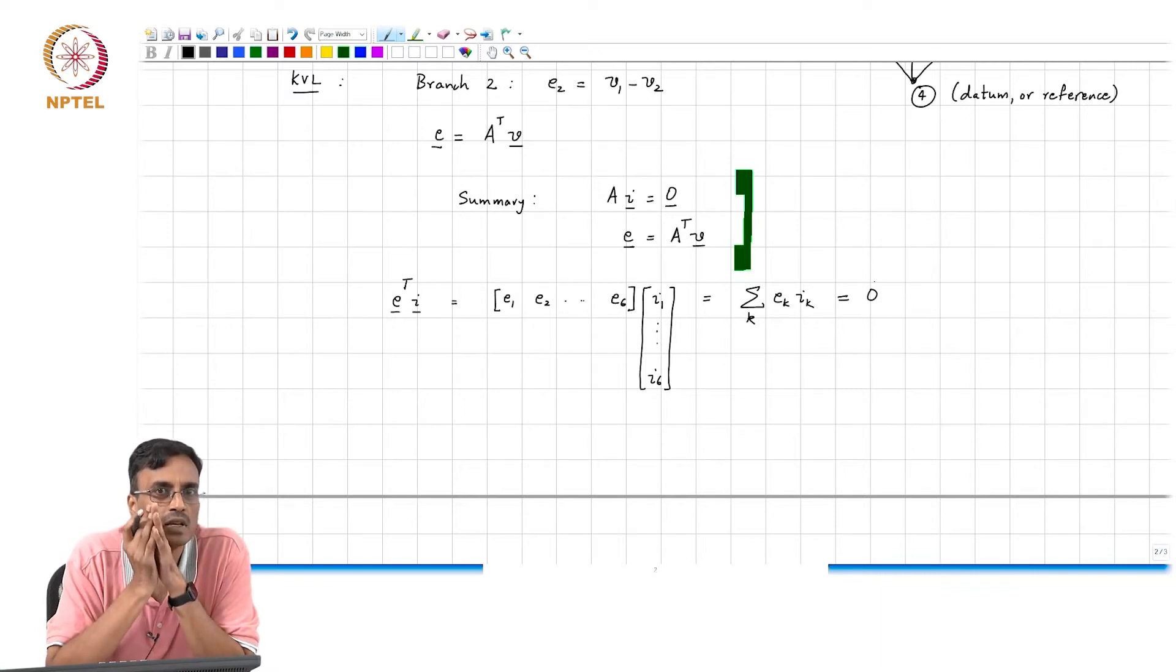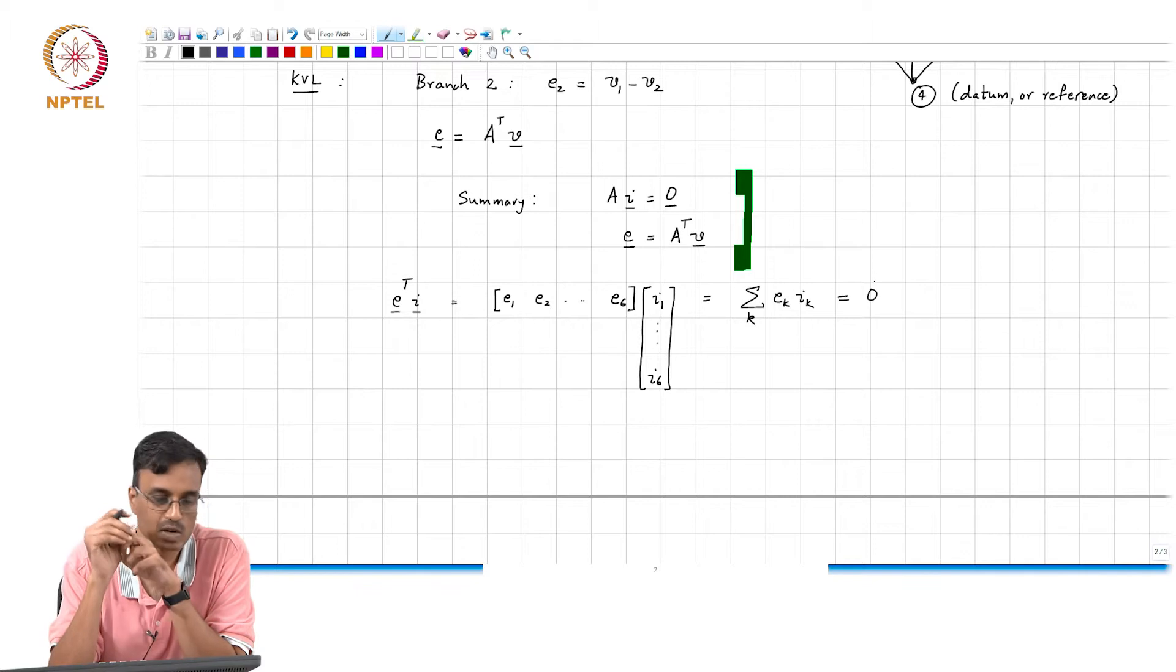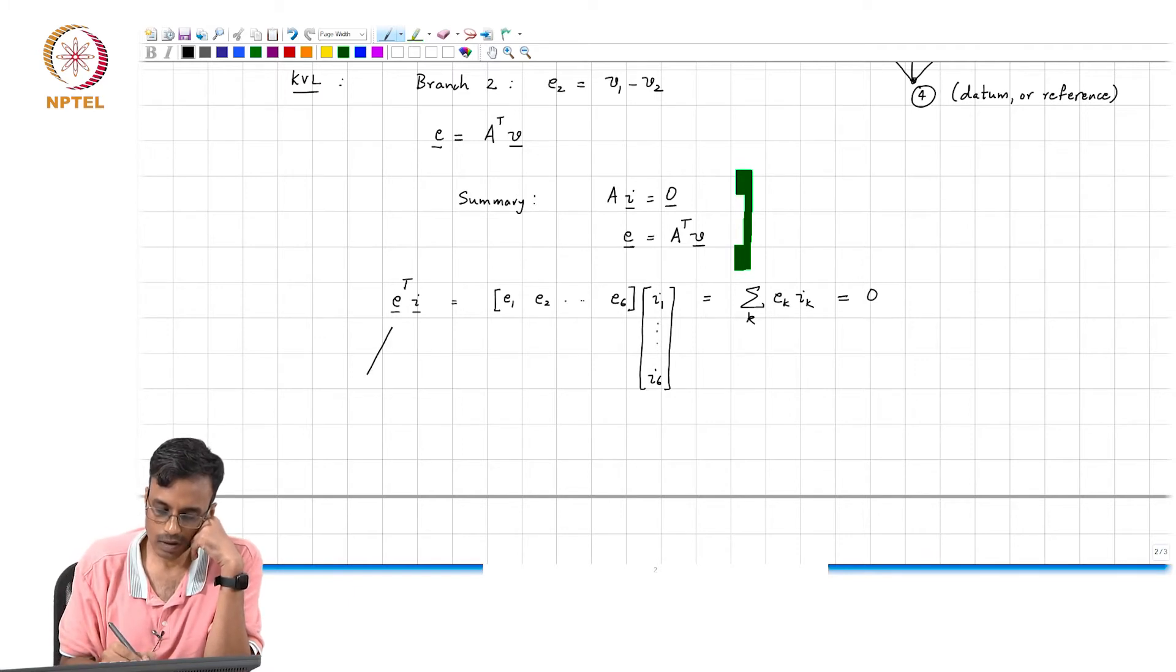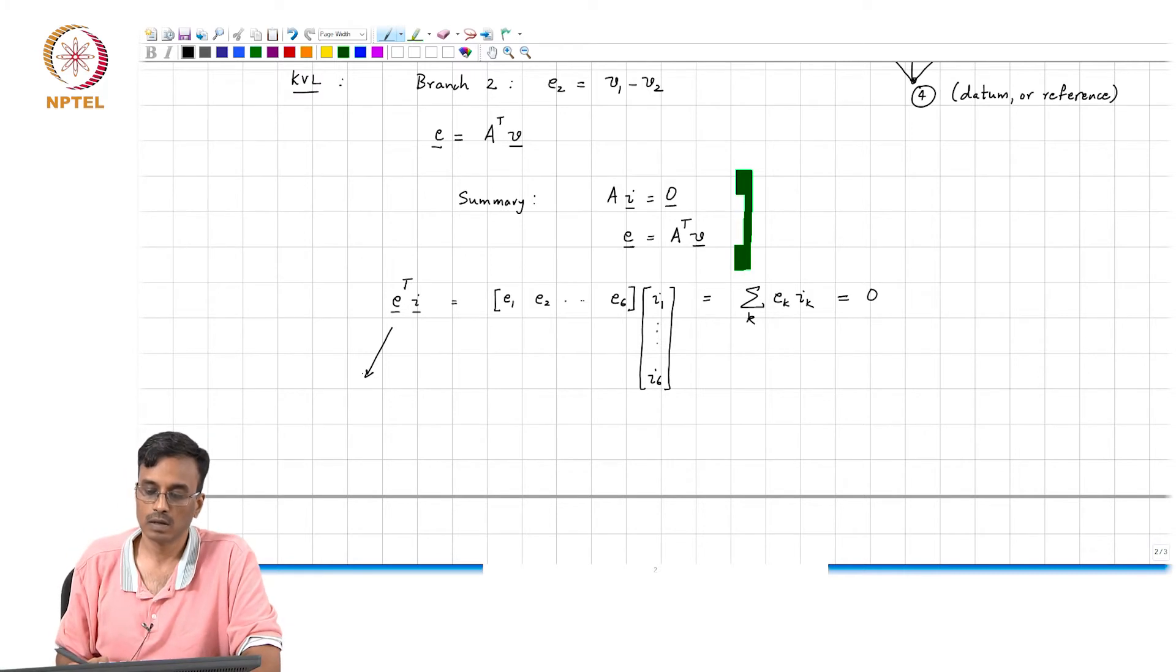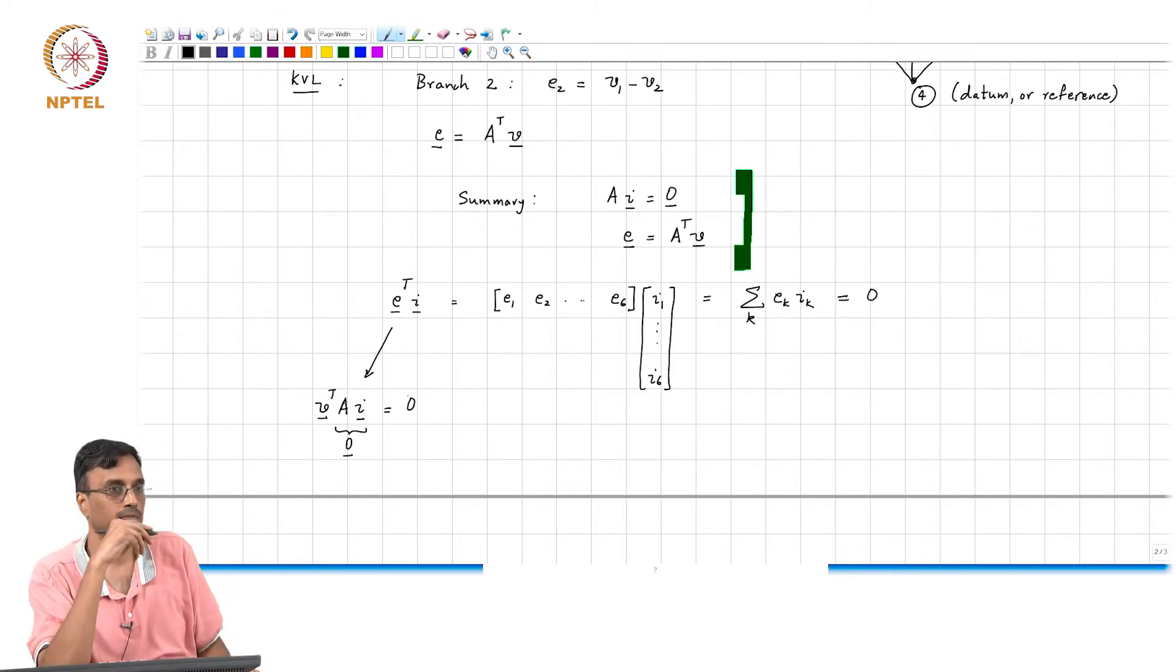So, at every time the power is conserved. Total power generated and total power dissipated in all the branches is the same. So, let us see if that is being predicted by our KCL KVL equations. And so, what is E transpose? It is simply B transpose A, and of course, this is I. And we know that this guy is 0. So, this must be the scalar 0.